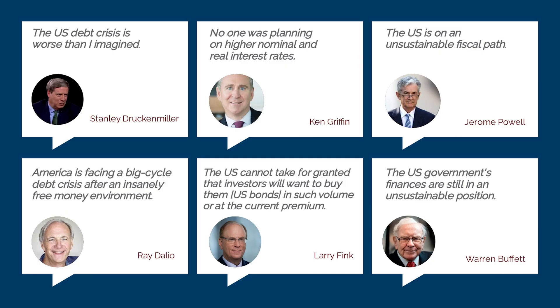Some very prominent people are sounding the alarm on U.S. government debt levels. Looking at these six people, they share two key similarities: they're all very wealthy — even Jerome Powell is worth between 100 and 200 million dollars, having been a partner at private equity group Carlisle before becoming Fed Chair, with the rest being multi-billionaires — and they're probably six of the most knowledgeable people in finance and investments today. Stanley Druckenmiller, one of the best macro investors, says the U.S. debt crisis is worse than he imagined. Ken Griffin, founder of Citadel, says no one is planning for high interest rates, which is what we have now.